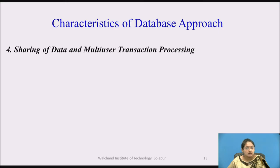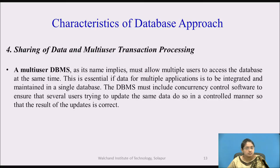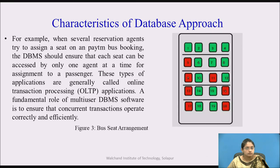Next is sharing of data and multi-user transaction processing. A multi-user database management system must allow multiple users to access the database at the same time. This is essential if data for multiple applications is to be integrated and maintained in a single database. The DBMS must include concurrency control software to ensure that several users trying to update the database at the same time do so in a controlled manner, so that the result of the update is correct. These types of applications are generally called online transaction processing, or OLTP applications. A fundamental role of multi-user DBMS software is to ensure that concurrent transactions operate correctly and efficiently.